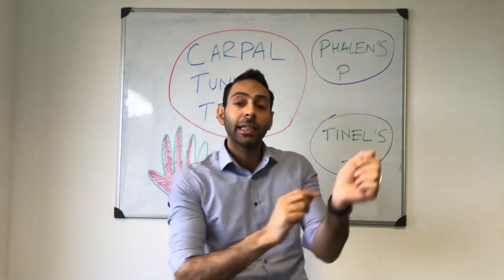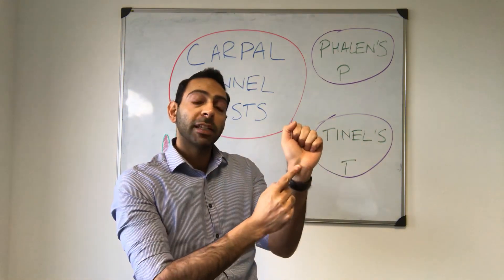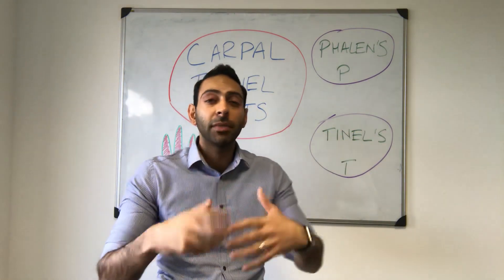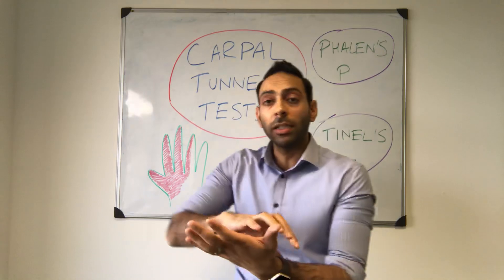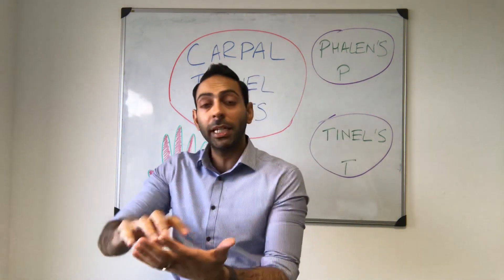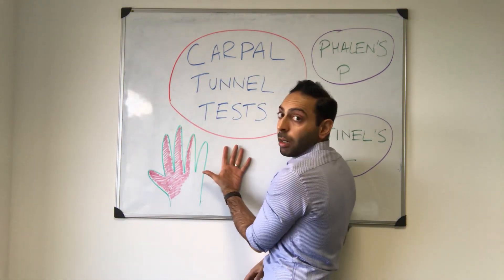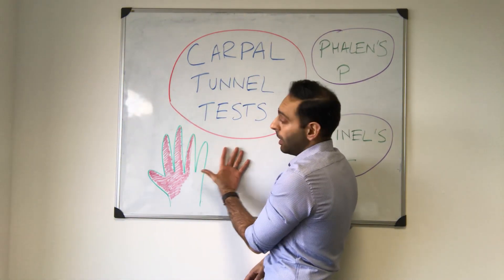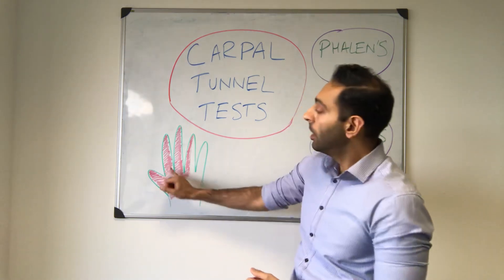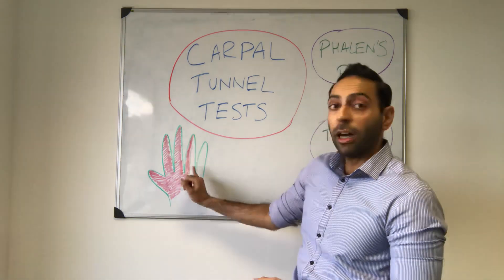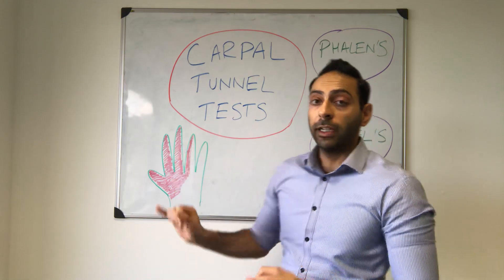Carpal tunnel is when you get compression of the median nerve as it runs through the wrist. In terms of symptoms, you get tingling and pain in the area where the median nerve represents. If you imagine my hand like this, that's the palmar aspect — you cover the thumb, the first finger, the second finger, and half of the third finger.